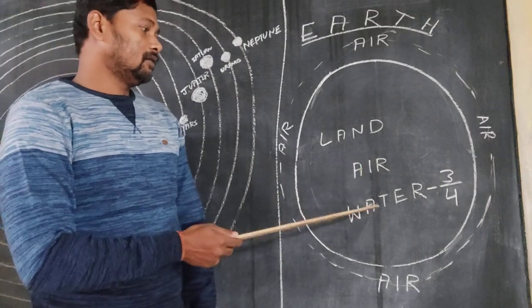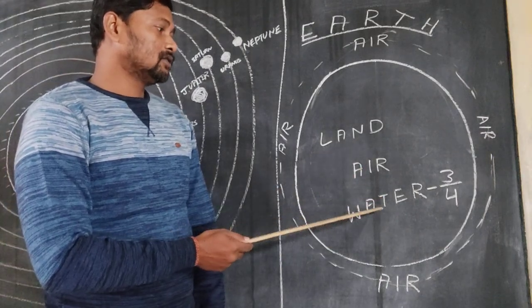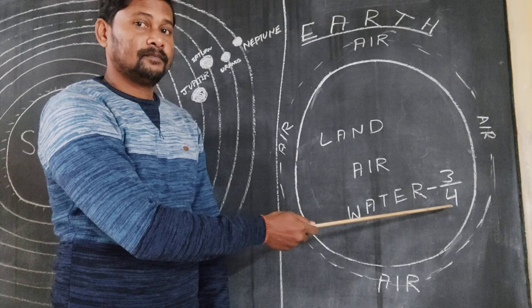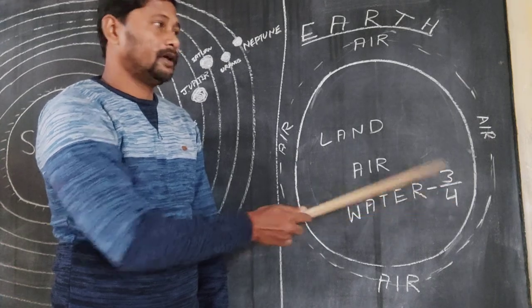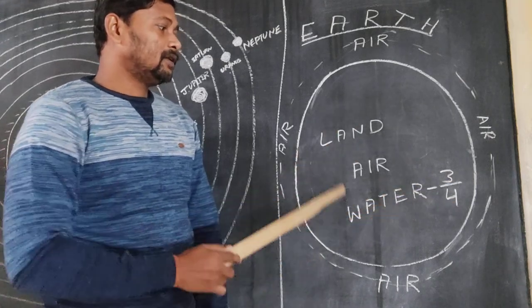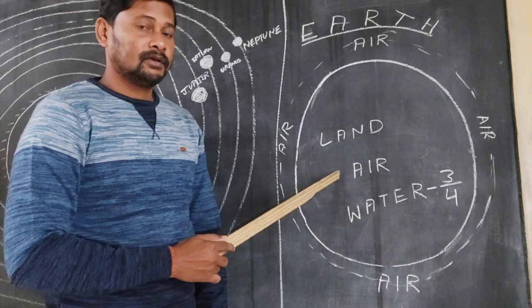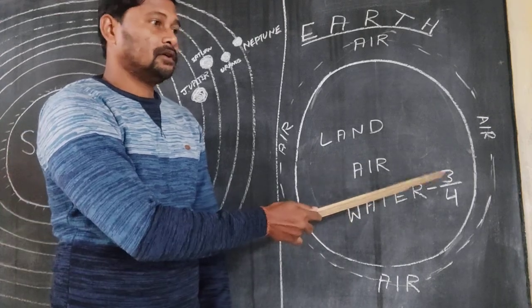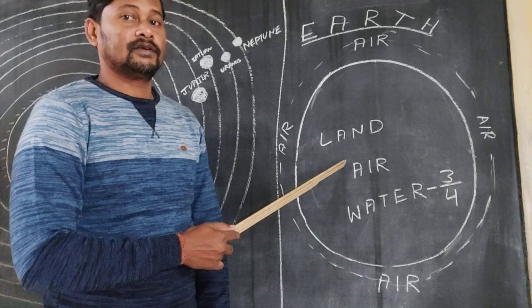And here the amount of water is 3 by 4. That means, if we will divide the earth into 4 parts, then 3 parts of the earth surface is covered by water, and only one part we have the land.